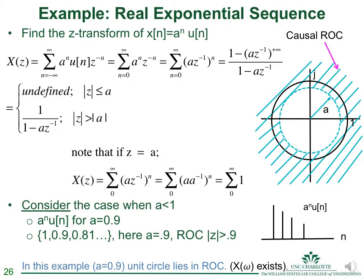An important example is the real exponential sequence a^n·u(n), analogous to an RC filter's exponential decay. We plug into the Z-transform definition; since u(n) makes it causal, the summation goes from 0 to infinity. We merge a^n and z^(-n) into (a·z^(-1))^n, fitting the geometric series formula.